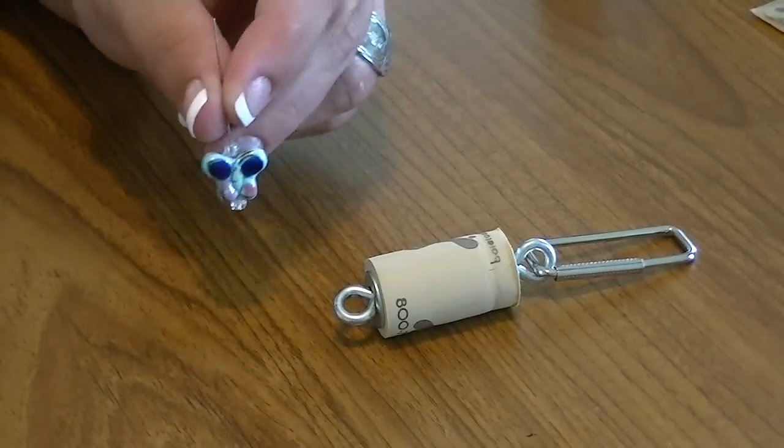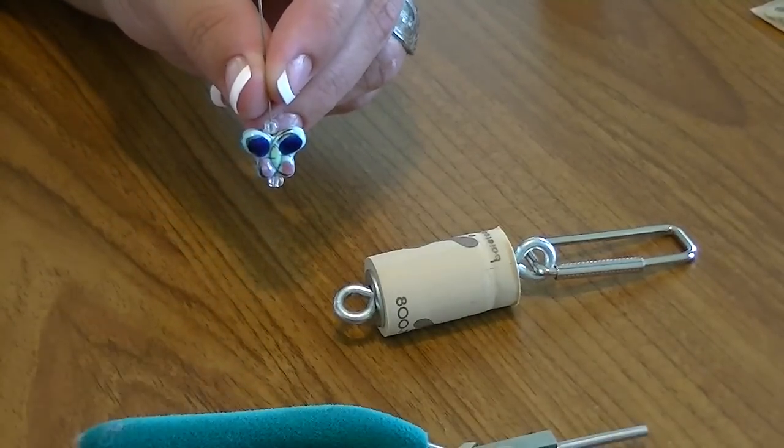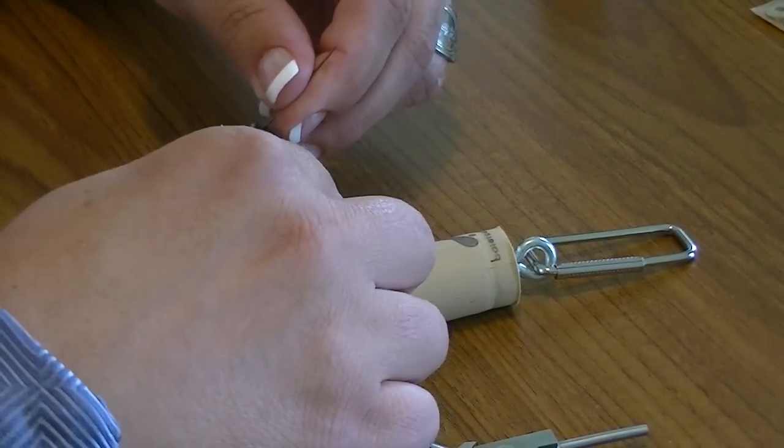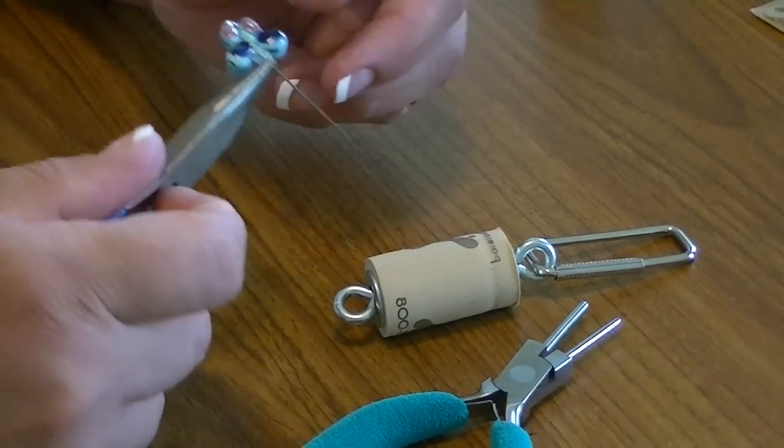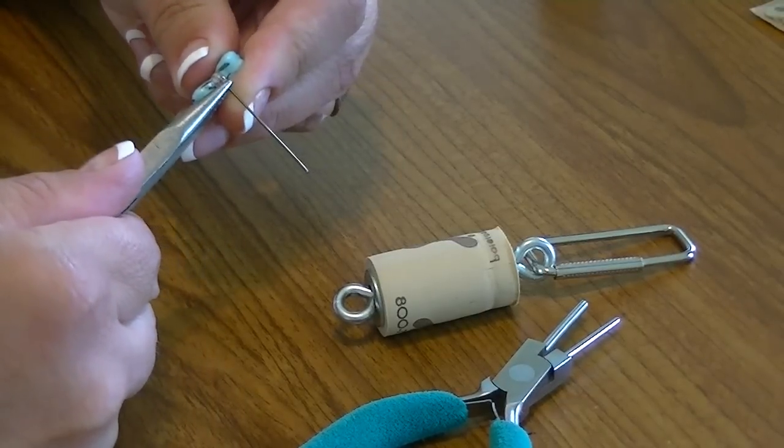Now you have a bit that looks like that. You're going to take your needle nose pliers and put it right at the top of that top bead, and you're going to bend it 90 degrees or just about 90 degrees.